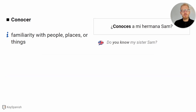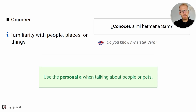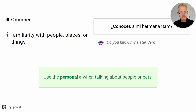'Conocer' speaks about familiarity with people, places, or things. '¿Conoces a mi hermana Sam?' — do you know my sister Sam? If you have been paying attention, I introduced you to her — 'te la he presentado, no introducido, antes.' So with familiarity, use 'conocer.' Make sure that when you refer to people or pets, you use the personal 'a.' So '¿Conoces a mi hermana?' Before we said '¿Conoces el restaurante?' — but with people, you use the personal 'a.' You can also use 'conocer' with places: 'No conozco Cáceres, pero quiero visitarla' — I don't know Cáceres, I want to visit it.